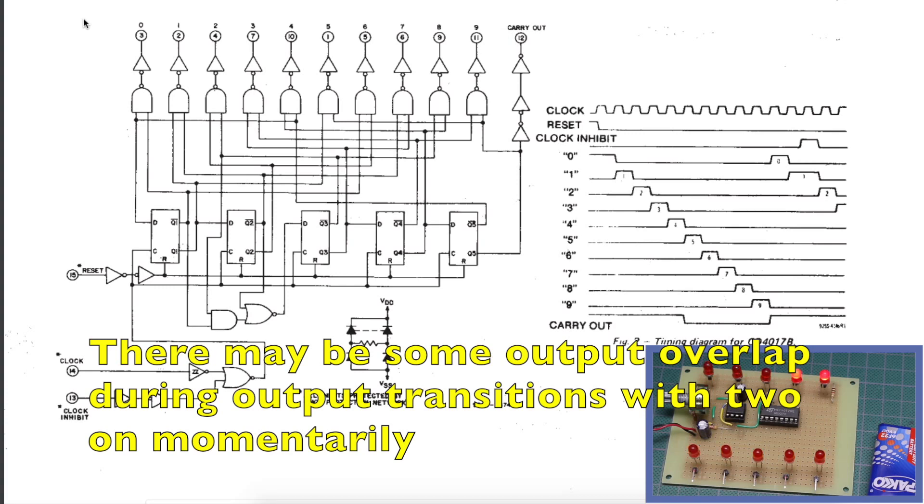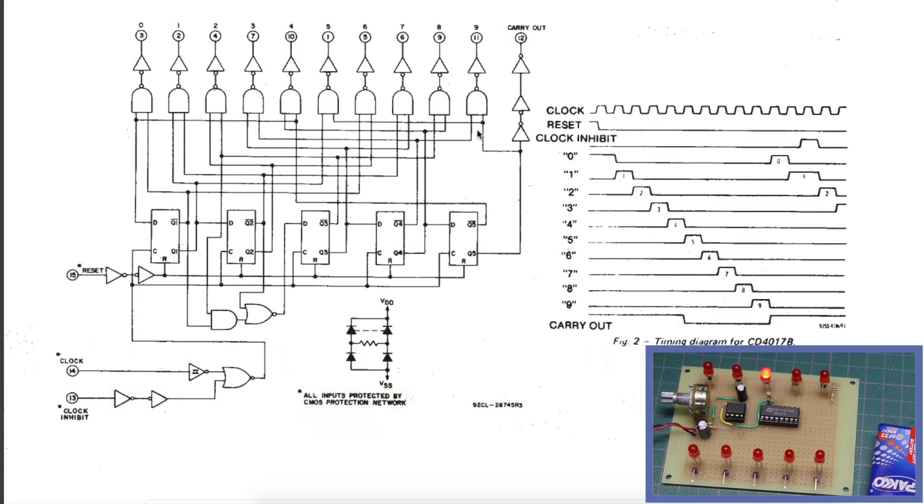So if you put LEDs on those outputs, you'll get a light chaser that goes one light at a time, and when it gets to the end, it'll start at the beginning again.